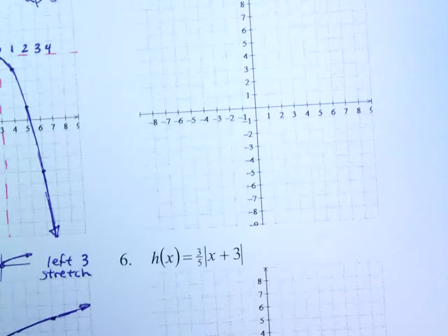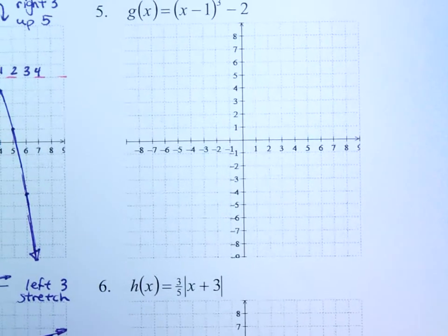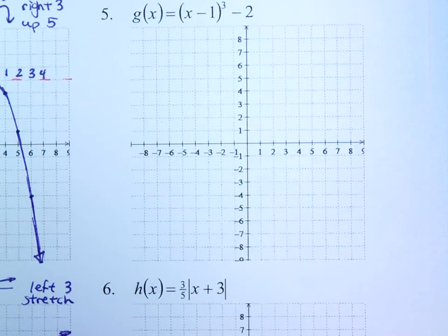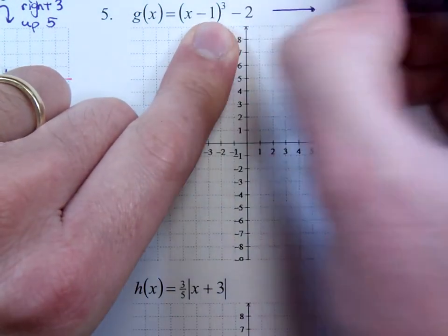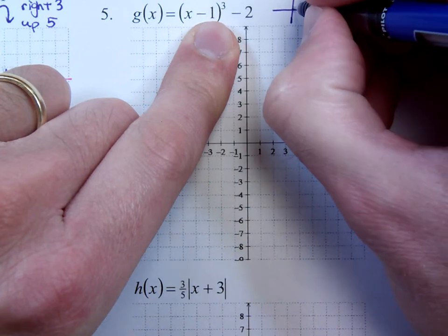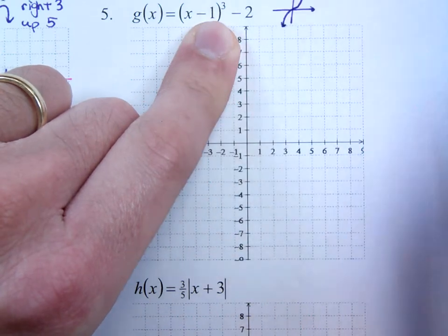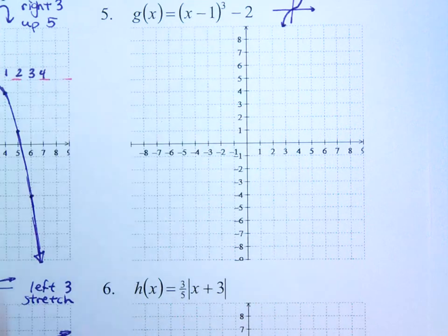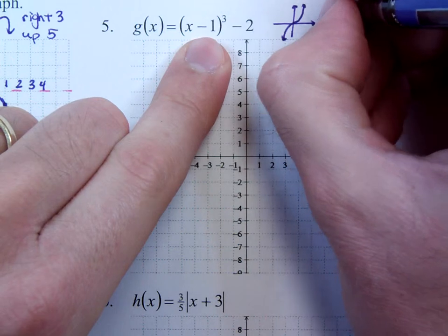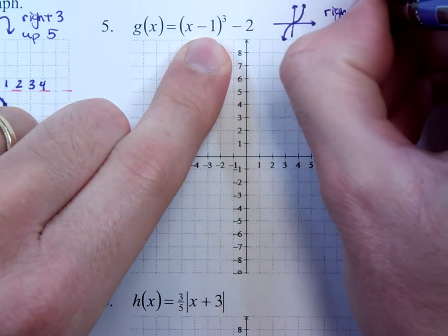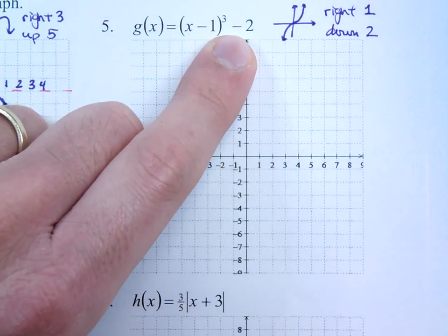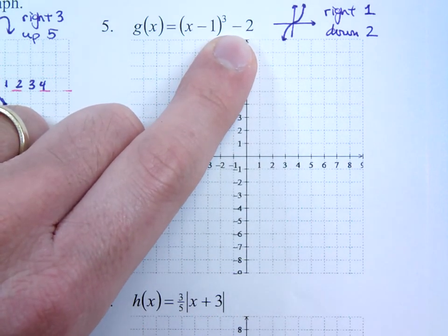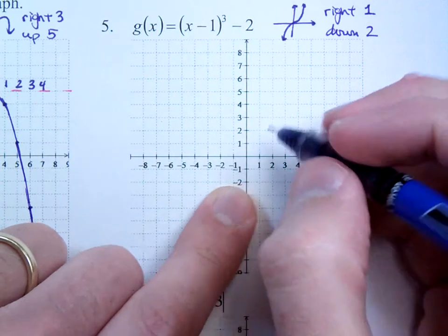Alright, number 5 is a cubing function. We see the 3 here, so I expect this guy to have a shape that looks like this. Now, what have I done with this guy? Well, according to what I have here, this guy is going to the right 1 unit and down 2. So let's see what happens with this. If I go to the right 1 and down 2, I'm going to be right here.